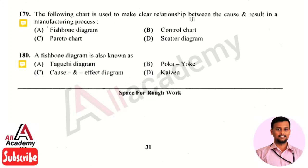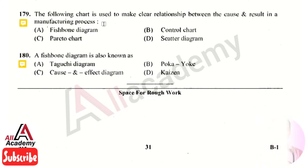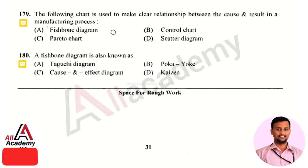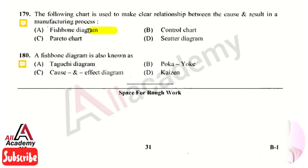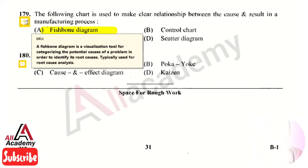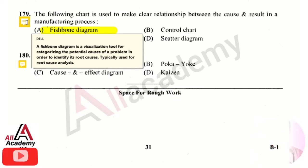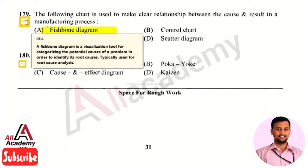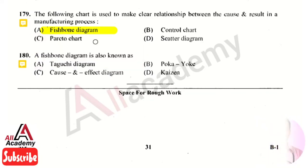The next question is: the following chart is used to make the relationship clear between cause and result in the manufacturing process. The right answer is option 1, fishbone diagram. A fishbone diagram is a visualization tool for characterizing potential causes of a problem in order to identify its root cause, and is typically used for root cause analysis.